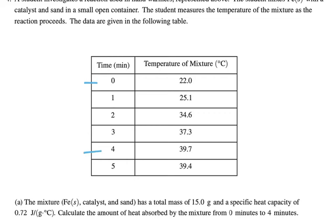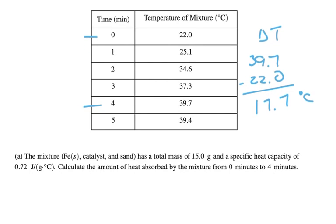From 0 to 4 minutes, we're looking at temperatures 39.7°C and 22.0°C, so delta T is 17.7°C. We have specific heat capacity, mass, and temperature change, so this looks like Q = mcΔT.